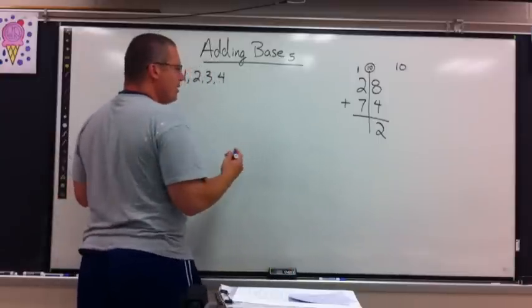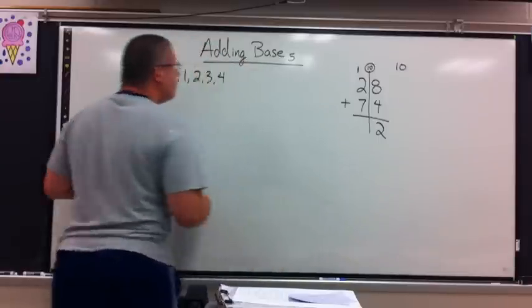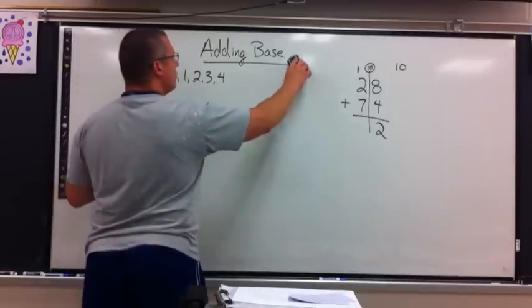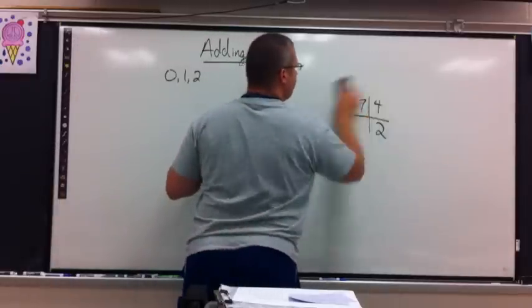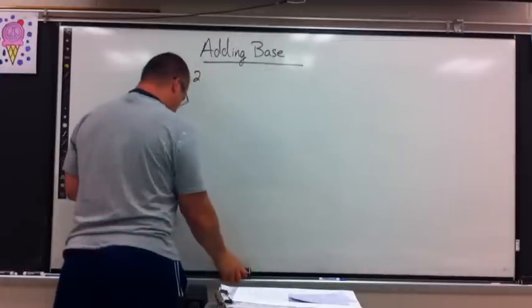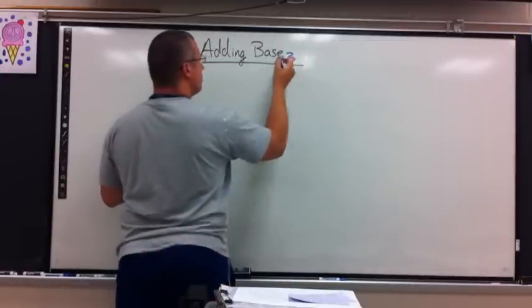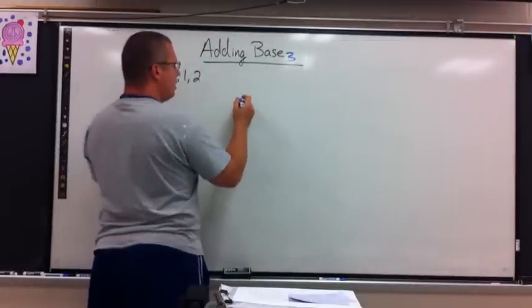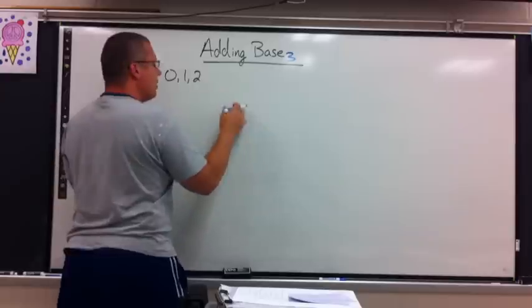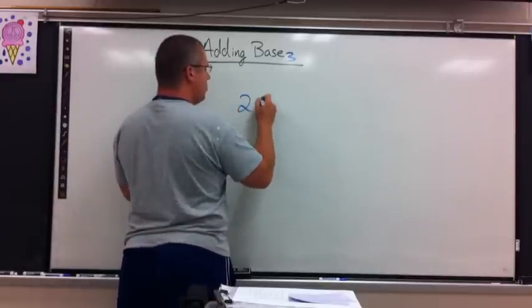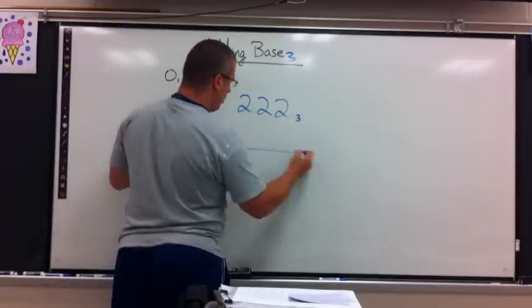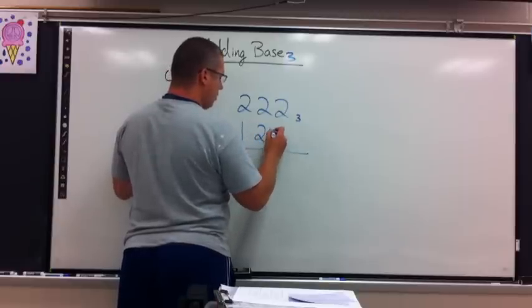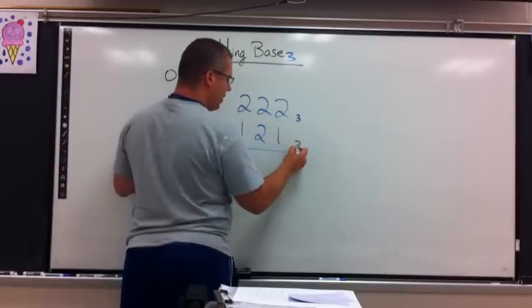Let's try one more. Let's do base 3. So in base 3 now, I'm allowed 3 digits possible. 0, 1, and 2. So I have to choose these numbers if I'm going to make a number. Let's do 222 base 3, plus 121 base 3.